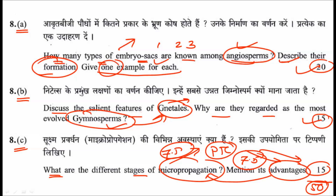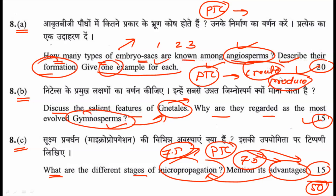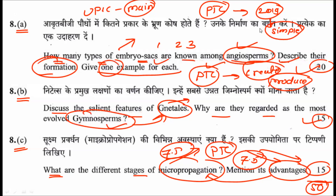Observing this paper carefully, questions from plant tissue culture appear in nearly every section — reflecting its current relevance due to rapid deforestation, as plant tissue culture can produce large numbers of plants in relatively less time. Overall, this paper for UPSC Mains Botany Optional 2019 contains very simple to moderate questions. If you have graduated in botany, you can easily answer all these questions using graduation-level books.